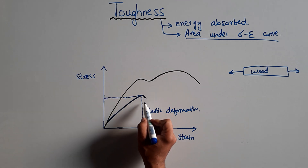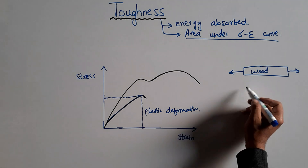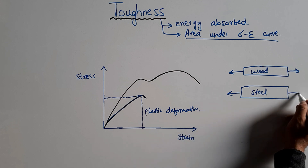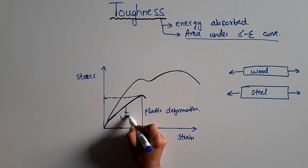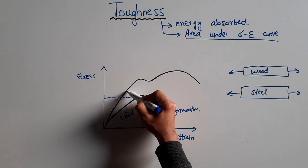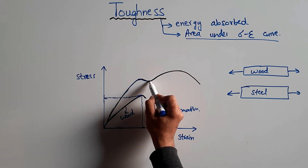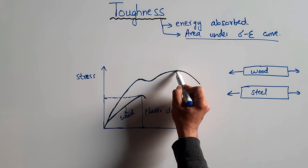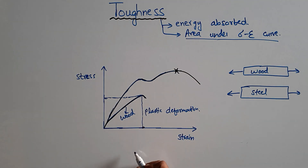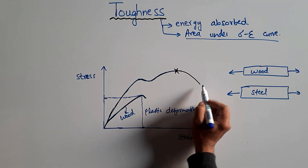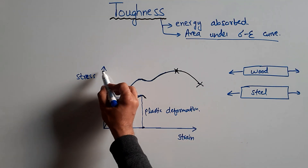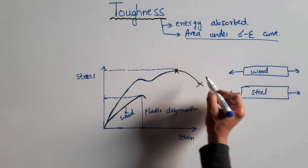Now consider the steel material on the other side. Applying load to the steel, we can see its stress-strain graph. Steel reaches the yield stress and then starts to take load again, reaching the maximum stress, also known as the ultimate tensile strength. This material continues to take load until rupture at that point. A high amount of stress and also a high amount of strain can be observed in this material.